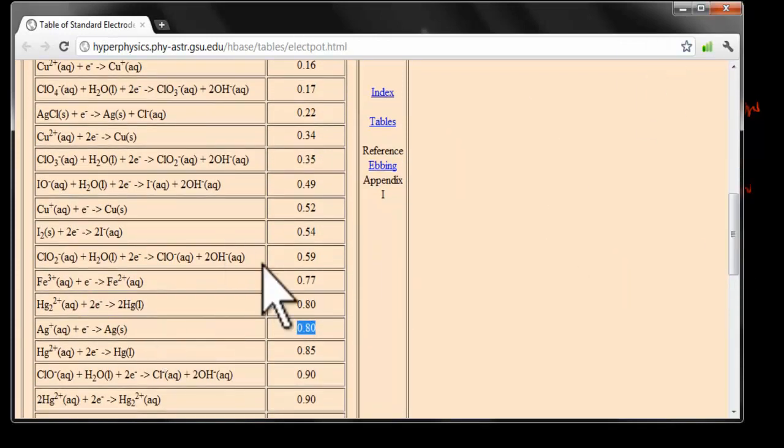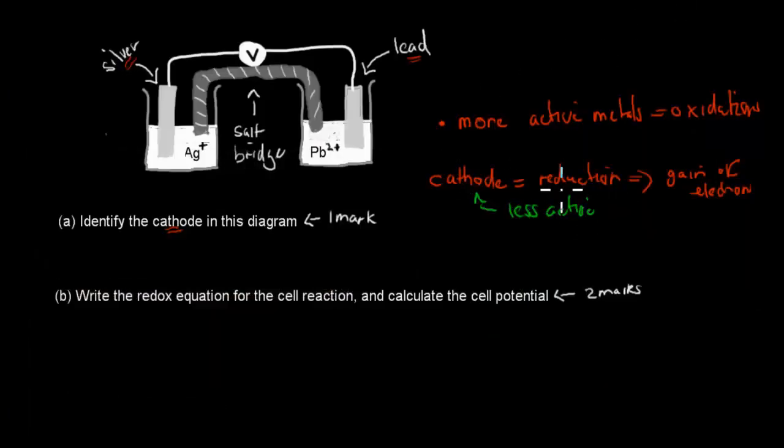So, silver, Ag, is our cathode, because cathodes gain electrons. And we just looked at how likely they were to gain electrons. And silver was positive, whereas lead was negative. So, our A part, silver is the cathode, as silver gains electrons from lead.